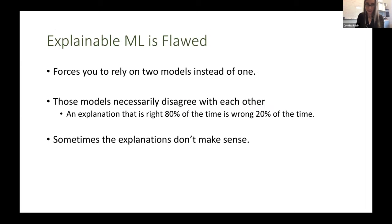My second argument is that explainable machine learning is fundamentally flawed, because it forces you to rely on two models instead of one. You have the original black box, and then you have the model for the explanation. Those models necessarily disagree with each other, because if they didn't, then you could throw out the black box altogether and just use the explanation model.